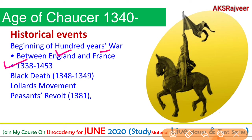The next major incident is the Black Death. You will find its dates listed as 1347 to 1351 in some places, and 1348 to 1349 in others. The exact time period is 1347 to 1351. Then we have the Lollard Movement, which I will cover in the upcoming slides. And then we have the Peasants' Revolt, which was one of the biggest incidents of this era.